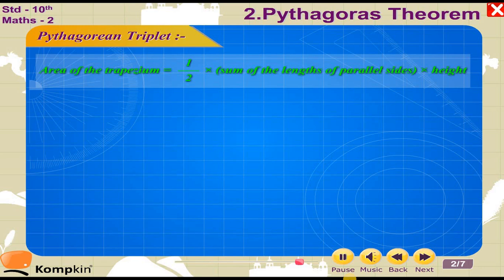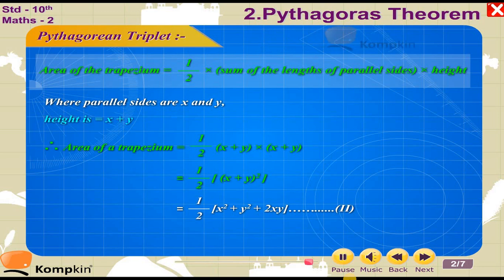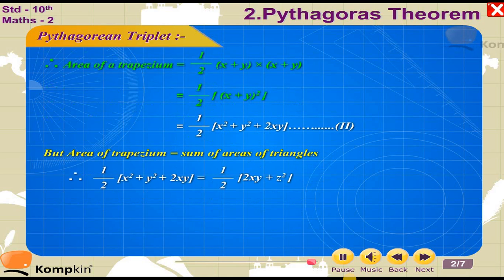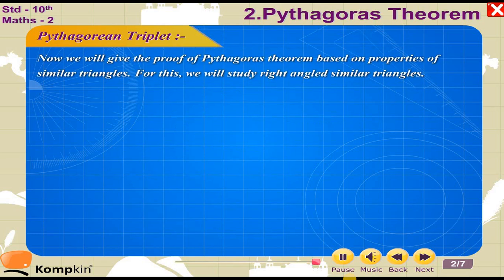Area of trapezium = (1/2) × (sum of parallel sides) × height, where parallel sides are X and Y, and height = X + Y. Therefore, area of trapezium = (1/2)(X + Y)(X + Y) = (1/2)(X + Y)² = (1/2)(X² + 2XY + Y²) ... (2). Since area of trapezium equals sum of areas of triangles: (1/2)(X² + Y² + 2XY) = (1/2)(2XY + Z²). Therefore, X² + Y² = Z², which is the Pythagorean theorem.